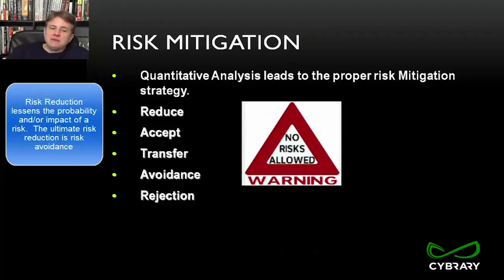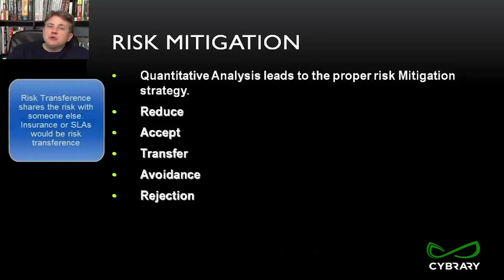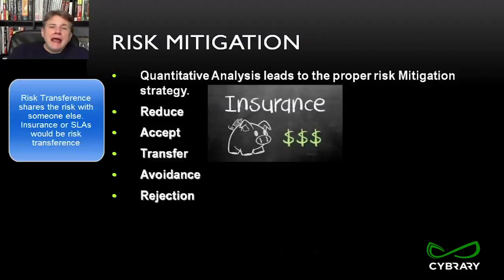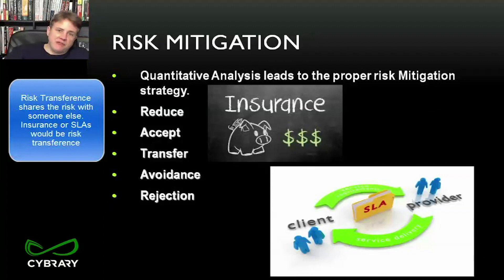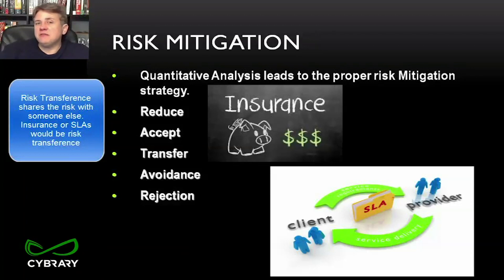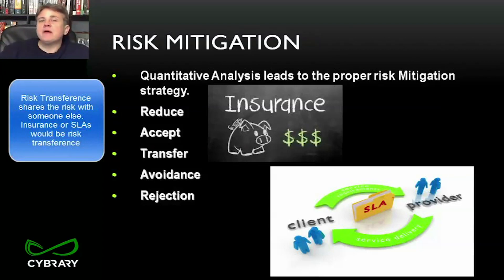Now, risk transference means sharing that risk with someone else. When we get fire insurance, it doesn't lessen the likelihood of having a fire or how much damage occurs — the house will be damaged to a certain degree whether or not I have insurance. What I am lessening is my portion of the loss; I'm going to share that loss with the insurance company. Service level agreements in IT are also risk transference — a vendor's commitment to a certain degree of performance or uptime, and if they don't meet those levels, there's usually financial compensation.